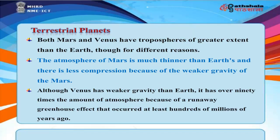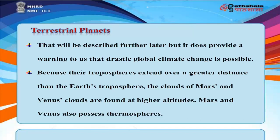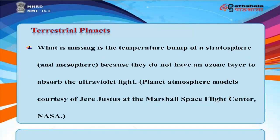Terrestrial Planets. Both Mars and Venus have tropospheres of greater extent than Earth's, though for different reasons. Mars's atmosphere is much thinner than Earth's due to weaker gravity causing less compression. Although Venus has weaker gravity than Earth, it has over 90 times the amount of atmosphere because of a runaway greenhouse effect that occurred hundreds of millions of years ago — providing a warning that drastic global climate change is possible. Mars and Venus also possess thermospheres, but lack the temperature bump of a stratosphere and mesosphere because they do not have an ozone layer to absorb ultraviolet radiation.